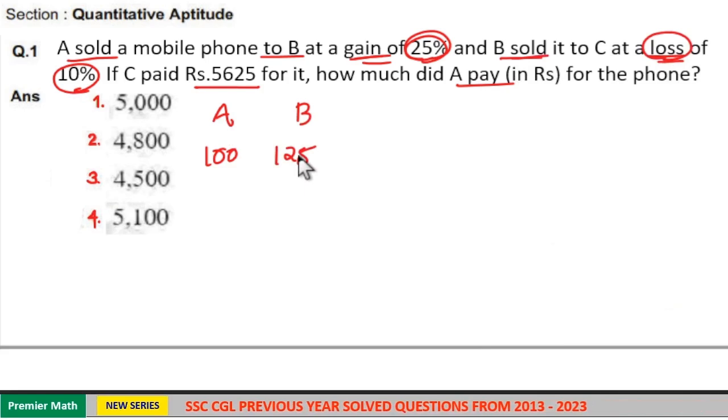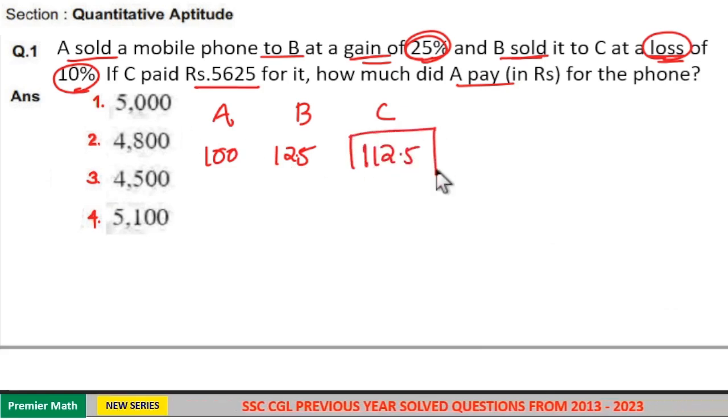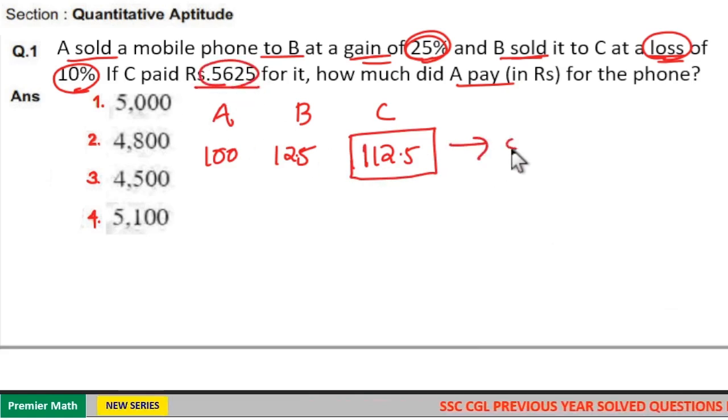So 10% of 125 is equal to 12.5. So he sold it to C at 125 minus 12.5 which is equal to 112.5. So final selling price is equal to 112.5, which is given in the question as 5625.